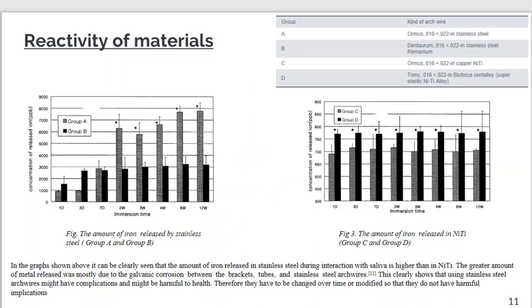Another factor is the reactivity of these materials with human saliva. In a study conducted, you can see two graphs: on the left side, groups A and B consist of stainless steel, and on the right, groups C and D consist of Nitinol. You can clearly see that the amount of iron released when reacting with human saliva was way greater in stainless steel than in Nitinol. This shows that Nitinol is more useful and less reactive.